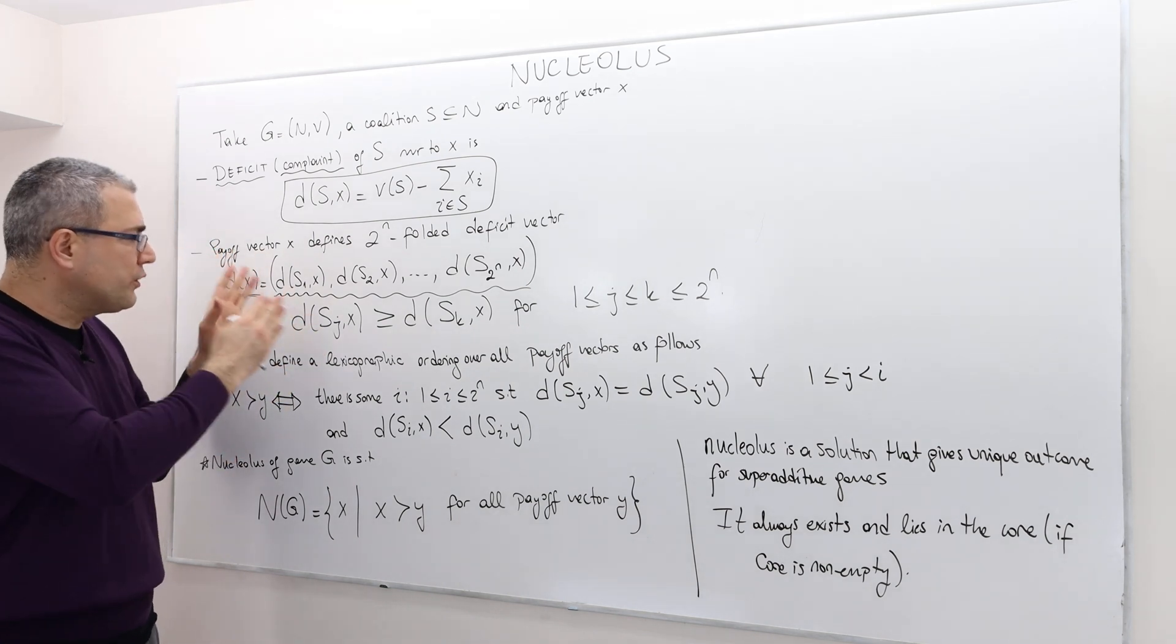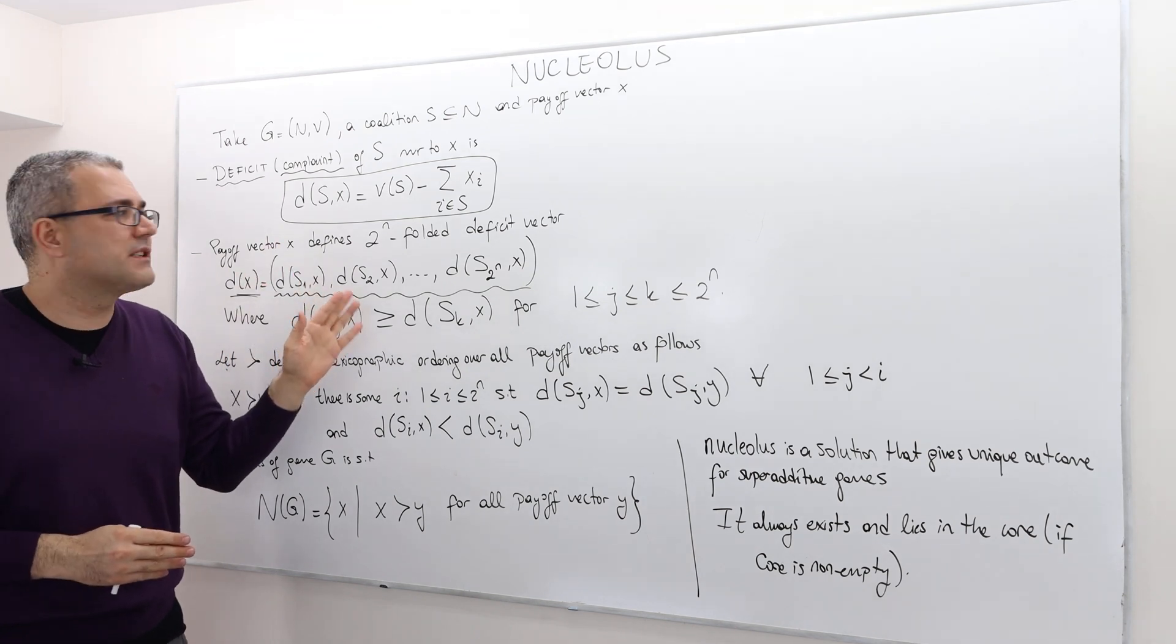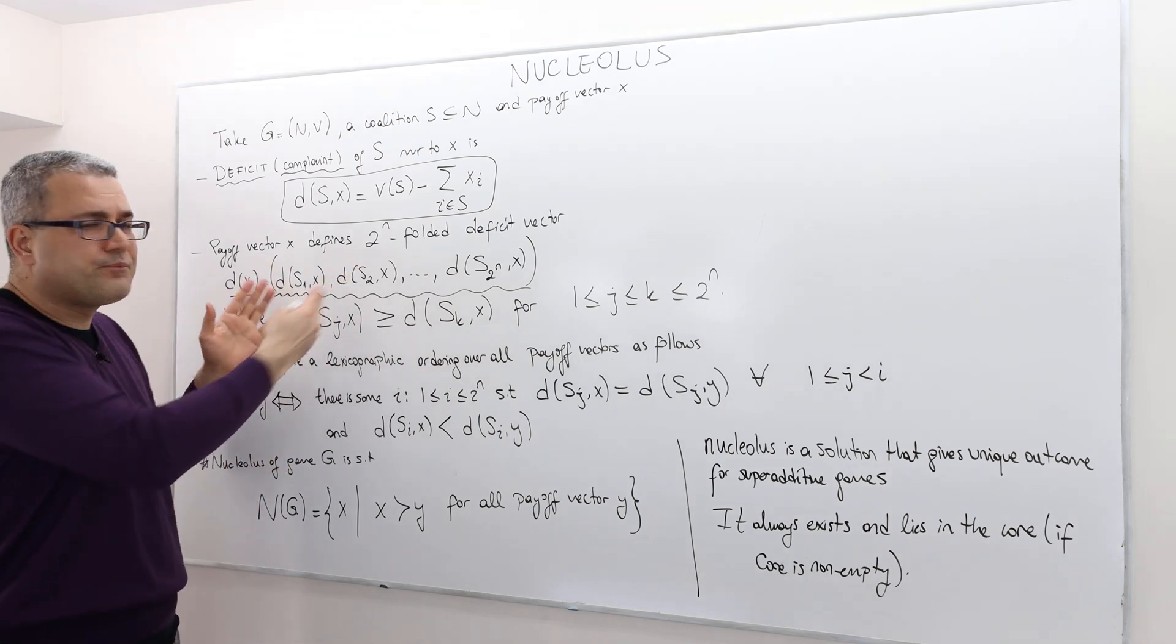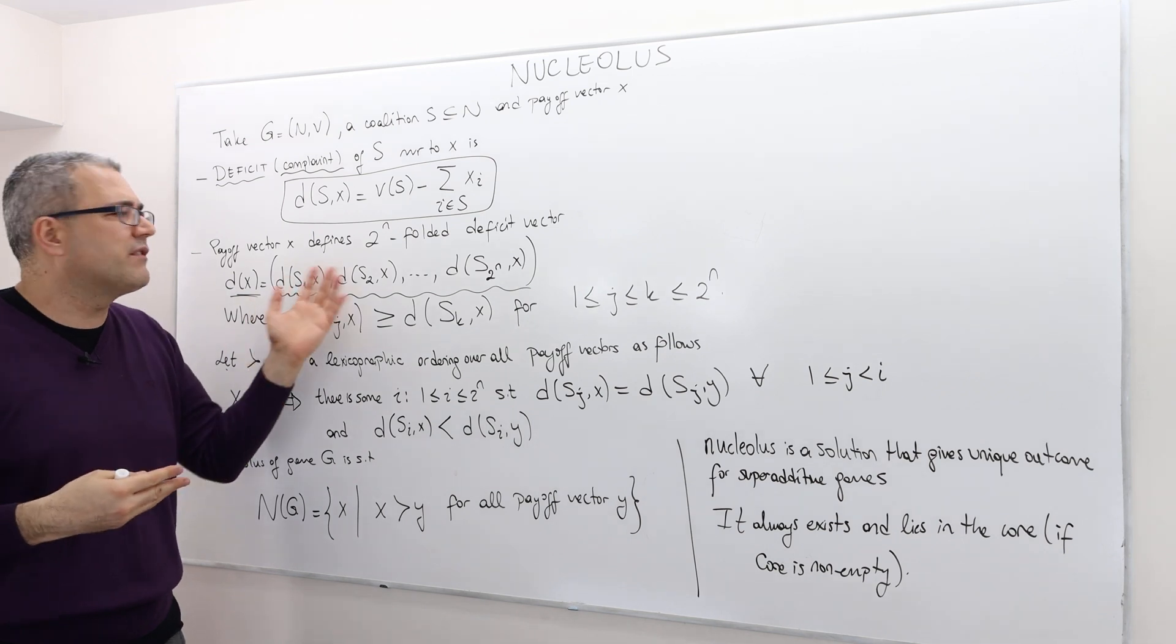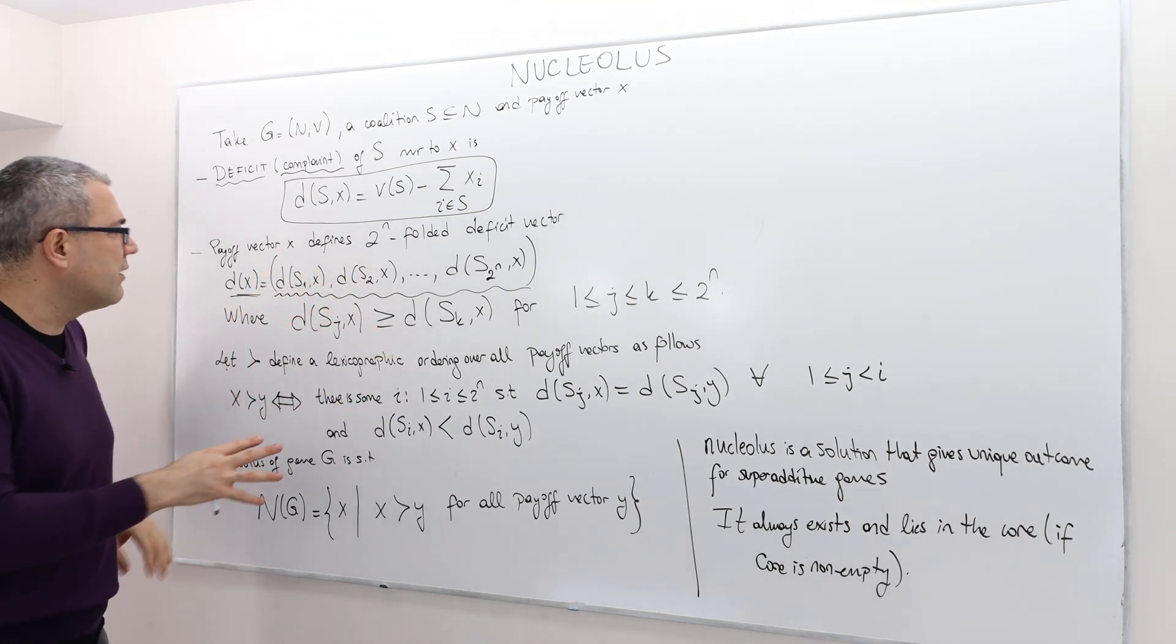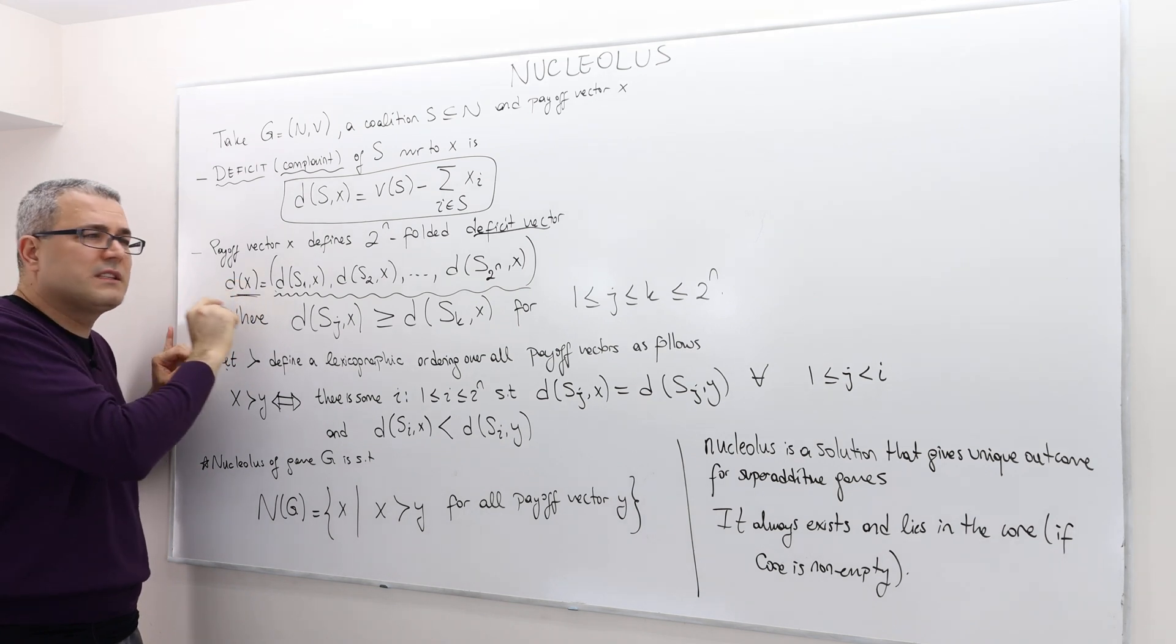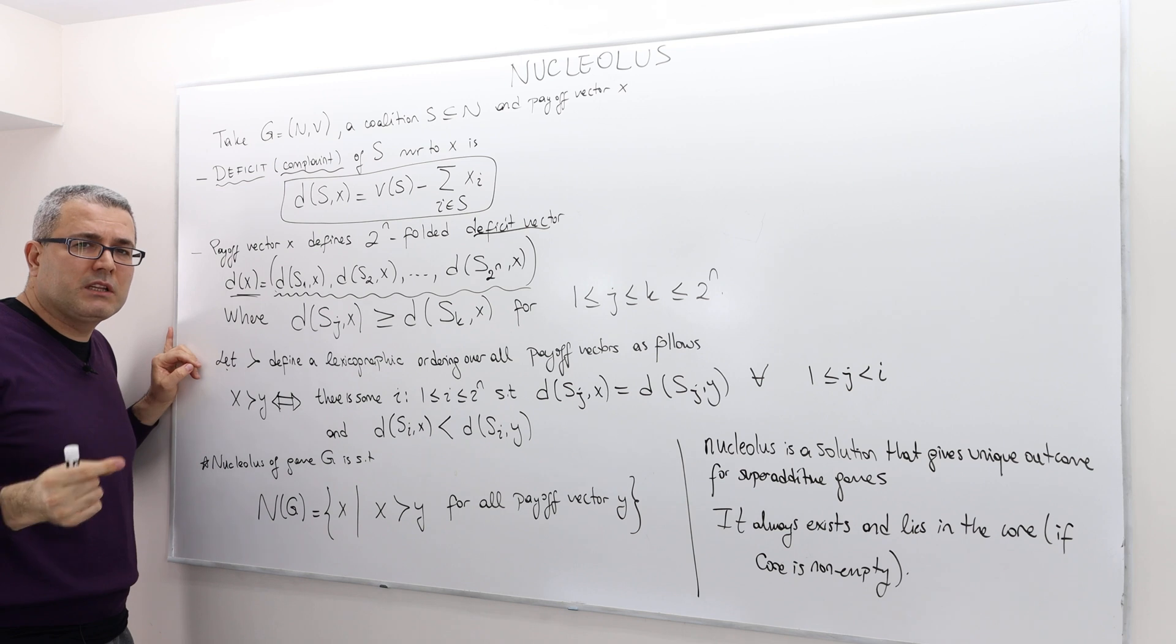We first put the highest complaint, and then the second highest, and then the third highest, and at the end, the lowest complaint. Obviously, if two coalitions have the same level of complaint, it really doesn't matter whether you put it the first or the second.